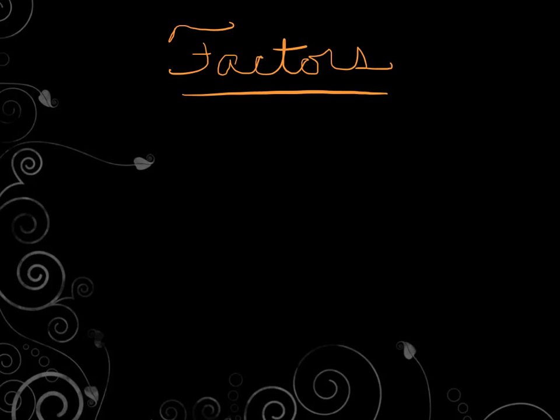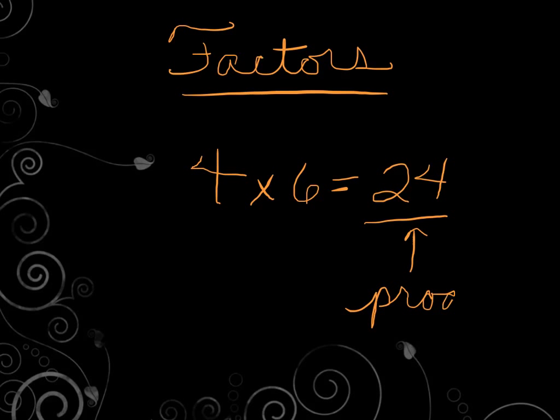So we'll start with a multiplication problem. Let's say 4 times 6 equals 24. In a multiplication number sentence, our answer is called the product. Some of you may remember that the two numbers multiplied together to give us the product are called factors. Any two numbers multiplied together give us a product. Those two numbers are called our factors.